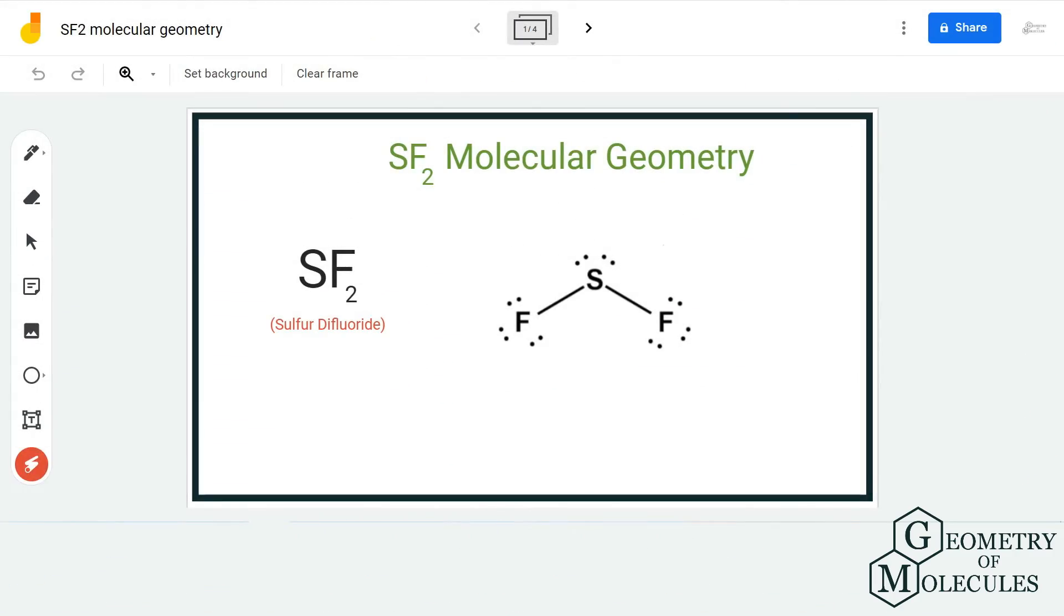Hi guys, welcome back to our channel. In today's video, we are going to help you determine the molecular geometry of SF2 molecule. It's the chemical formula for sulfur difluoride. To understand its molecular geometry, we are first going to look at its Lewis structure.